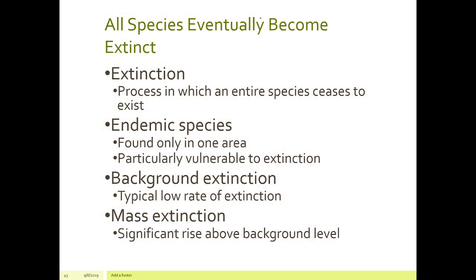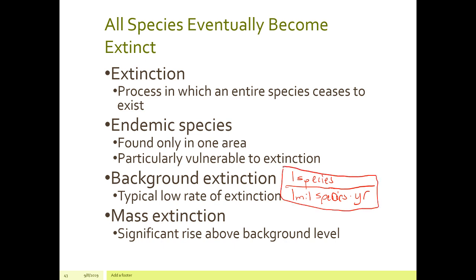The background extinction rate — what we consider typical — is one species per one million species per year. So for every million species, one goes extinct every year. We are currently seeing numbers in the tens to hundreds to thousands of species extinctions. That is mass extinction. Right now we are high above the background extinction rate.